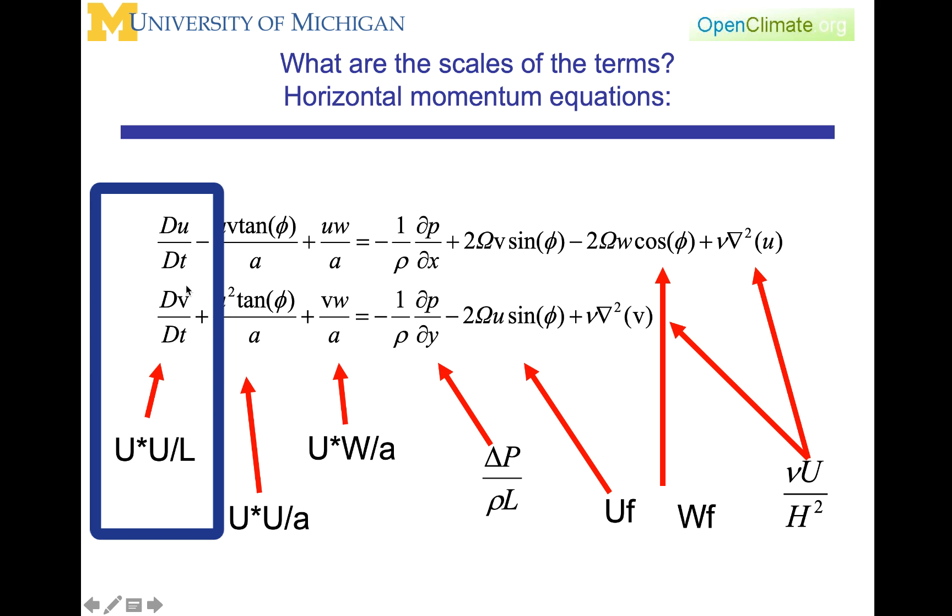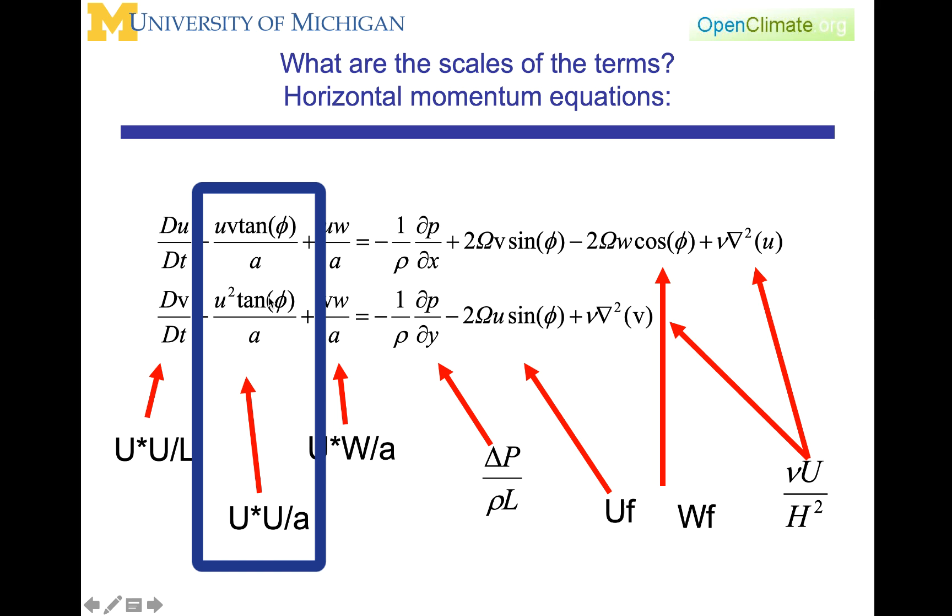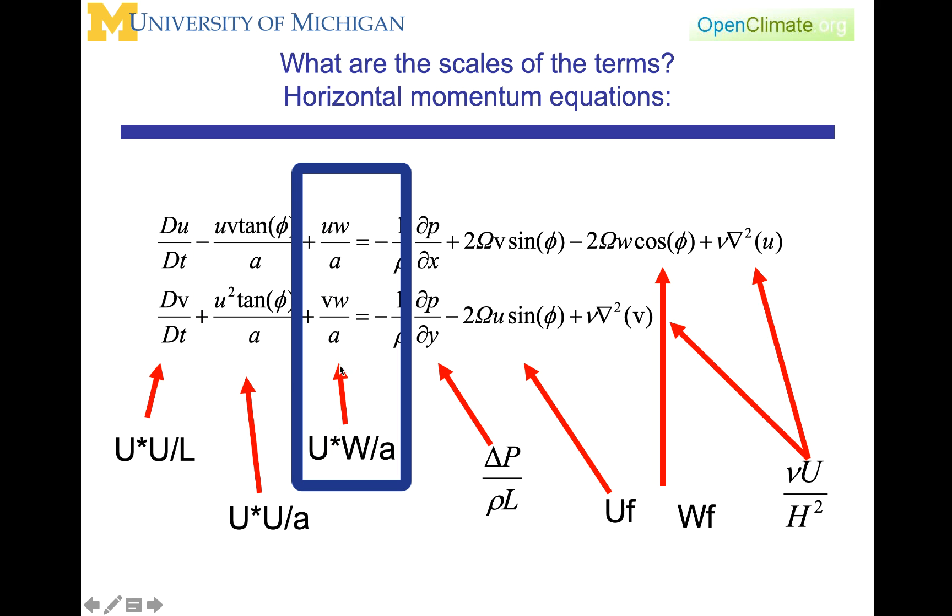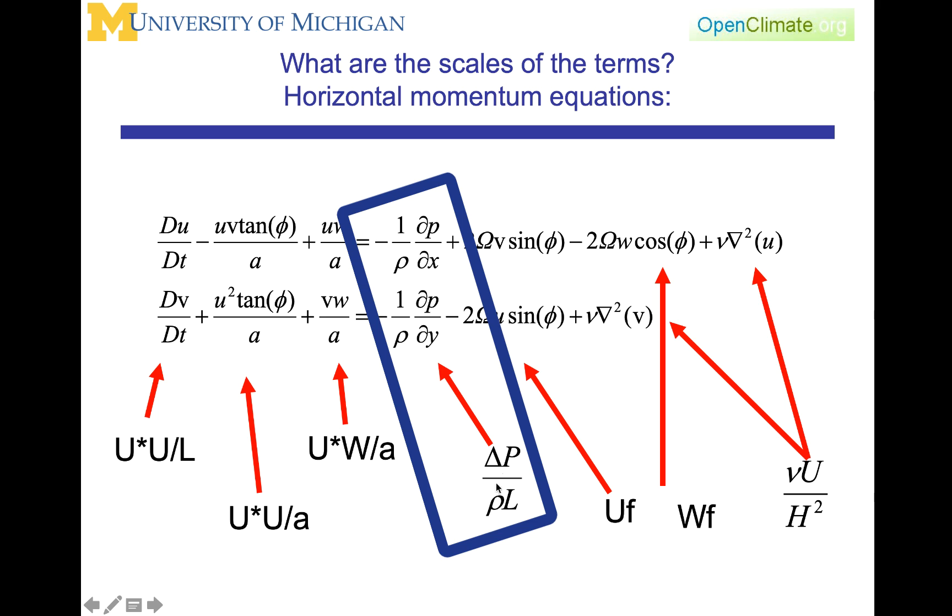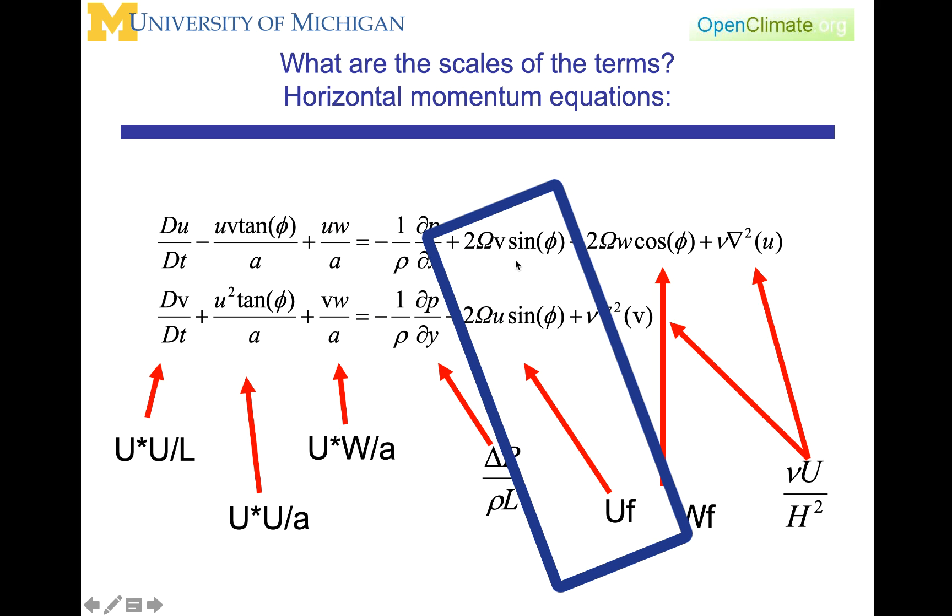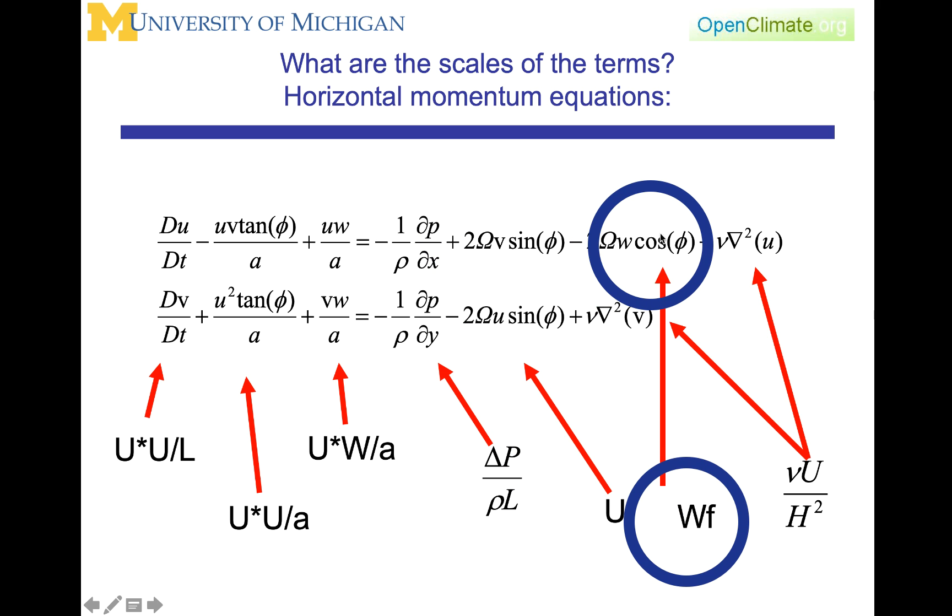That for these acceleration terms, you have U, which is coming from here, and then we have the U over L, which we derived earlier in just a slide in this lecture. For this term here, you're going to have u, u. The trigonometric terms are going to be considered as having a value of about 1, and that's then going to be over A. So this is u squared over A. This is uw over A. This is delta P over rho. And then here's this L, which is representing the length scale of the horizontal gradient. Here is uf, which is the Coriolis term. Here's wf, which is this Coriolis term.